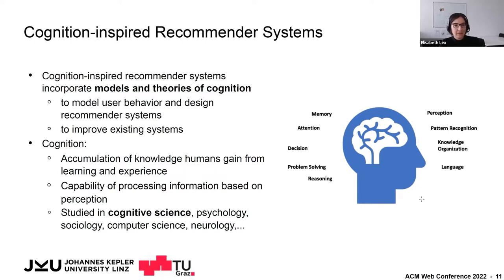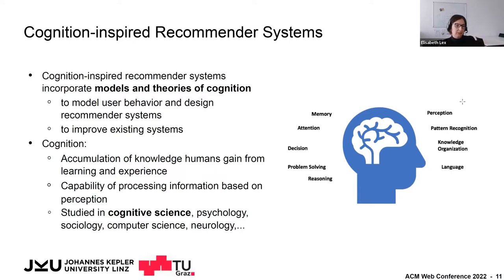Fundamental cognitive processes include memory, which we all need to interact with our physical and social environment; attention, which filters the large amount of information we perceive; decision-making; problem-solving and reasoning; and perception through our five senses and sensory registers. Pattern recognition, organization of knowledge, and formation of language are also fundamental cognition-related processes. It's a rich field and quite exciting for computer scientists to explore.